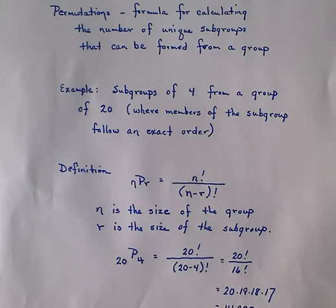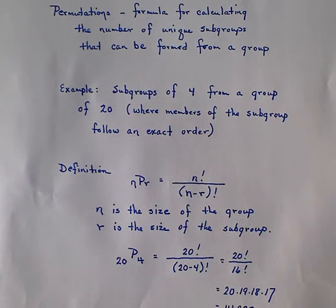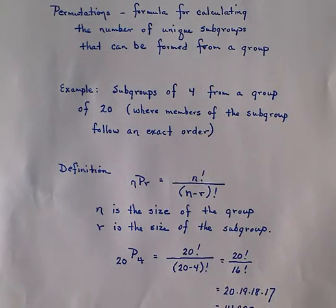The definition uses the notation N P R. N represents the size of the big group, P stands for permutations, and R stands for the size of the subgroup. Those values can change depending upon what you're actually trying to do.